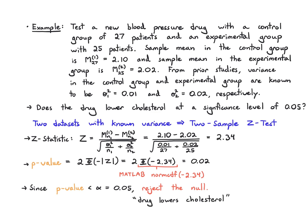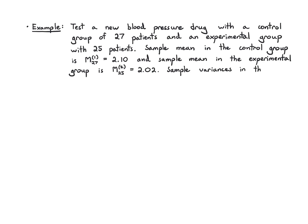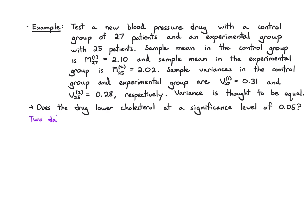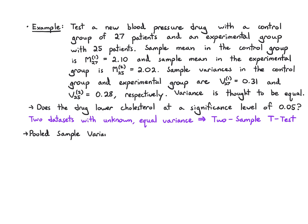Next we stay in the same scenario, but now the variances are unknown and measured: the control sample variance is 0.31 and the experimental is 0.28. We also believe the true underlying variance is equal across both groups. We're asking the same question — does the drug lower cholesterol — but at a significance level of 0.005. With two data sets with unknown and equal variance, we apply a two-sample t-test, and we first estimate the pooled sample variance.